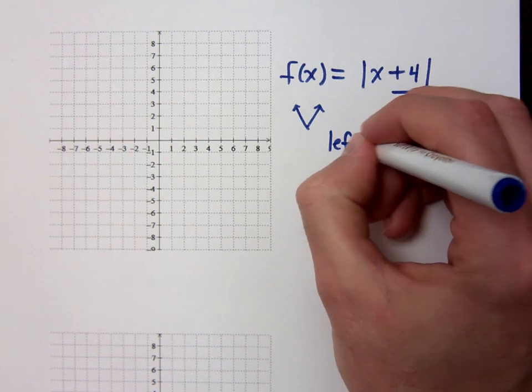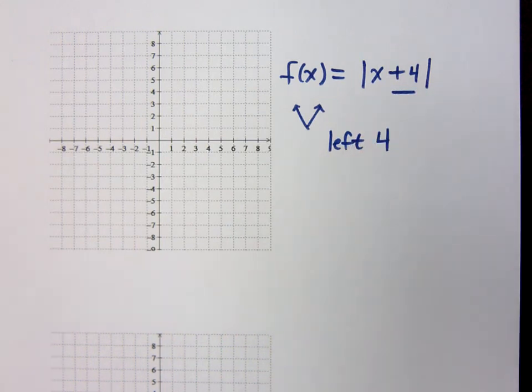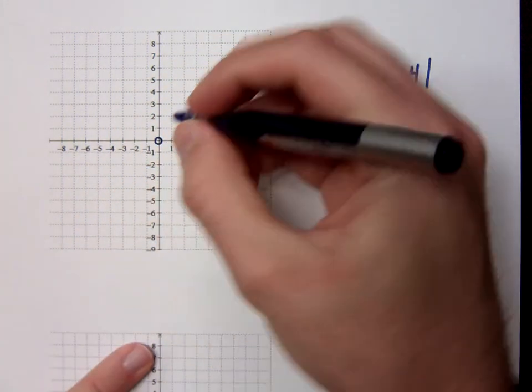So I see a plus 4, so I'm going to do the opposite, which means I'm going to go left 4. Now keep in mind that your original shape was this guy right here. He had a vertex at 0, 0.